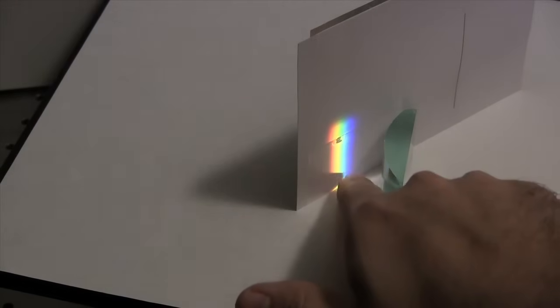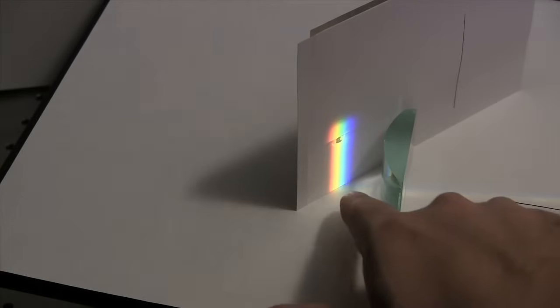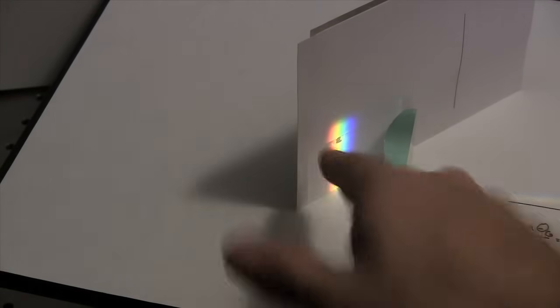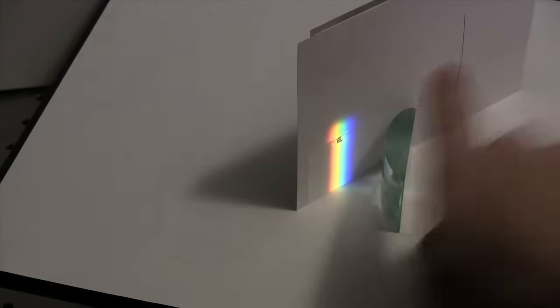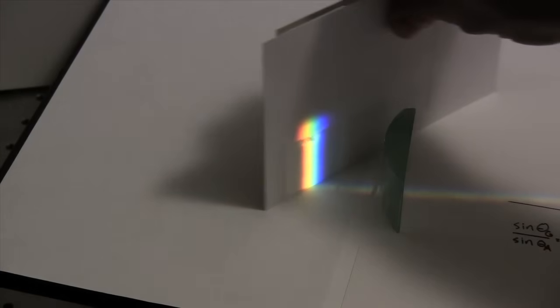We start with our screen close to the lens, and we see the same spectrum we saw before. Here is the light passing through the lens, and up above it we see the light that's sort of skipping the top of the lens. As we move our screen away, the colors begin to overlap.